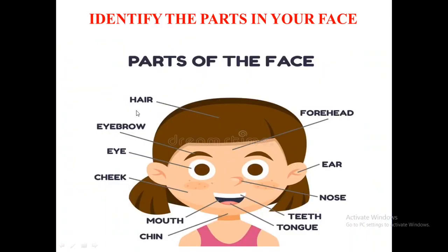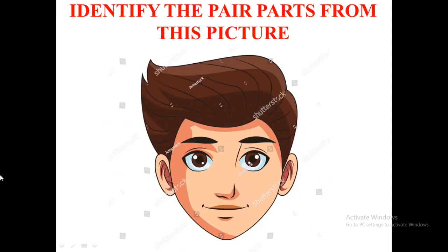Next we'll go to identify the parts in your face. Here you see the parts of our face: this is hair, this is forehead, this is eyebrow, this is eye, this is cheek, this is mouth, this is chin, this is ear, this is nose, this is the tip, and this is our tongue. You will learn the spellings of these parts.